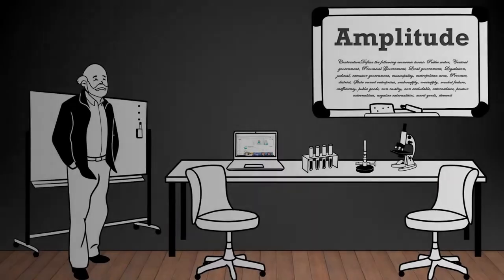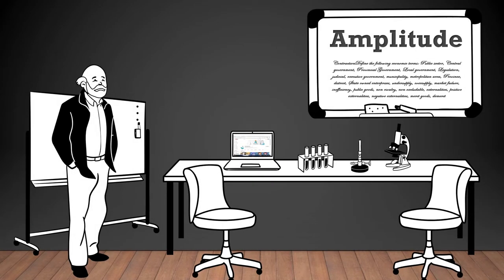Amplitude, the amplitude of a business cycle refers to the difference between the peak and the trough of the cycle, indicating the extent of economic fluctuations.